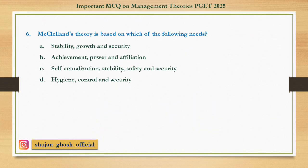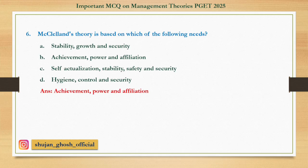Question number 6: McClelland's theory is based on which of the following needs? Option A: Stability, growth, and security. B: Achievement, power, and affiliation. C: Self-actualization, stability, safety, and security. D: Hygiene, control, and security. Answer is Achievement, power, and affiliation.